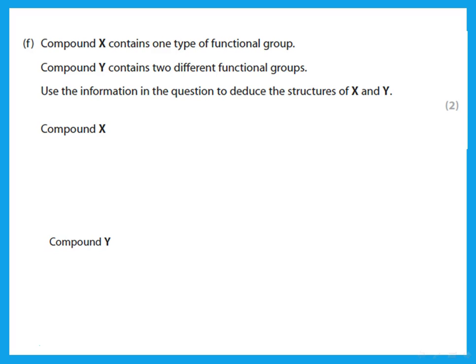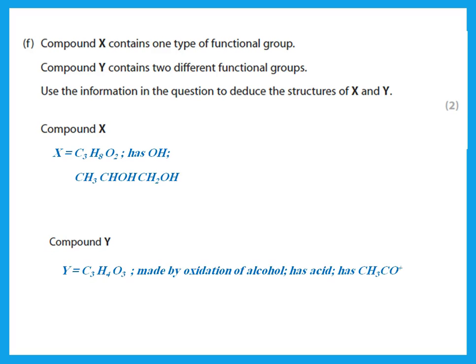Using all the information: compound X is C₃H₈O₂ with one functional group. Since it contains OH and has two oxygen atoms, it must have two alcohol groups — it is a diol. Compound Y is C₃H₄O₃, made by oxidation of an alcohol so it is an acid, and it contains the fragment CH₃CO⁺, giving the corresponding carboxylic acid structure.